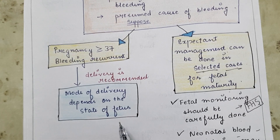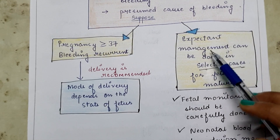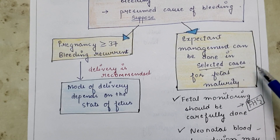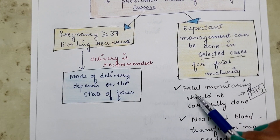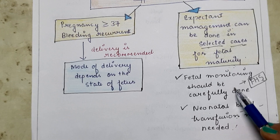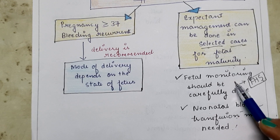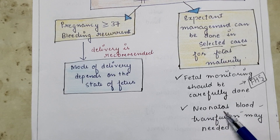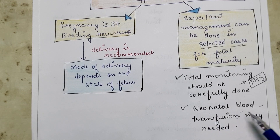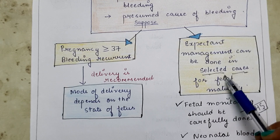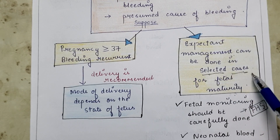If the pregnancy is less than 37 weeks, expectant management can be done in selected cases to allow fetal maturity — only when vaginal bleeding is controlled. Careful fetal monitoring is done, regularly checking fetal heart sounds for bradycardia, which would indicate decreased blood supply and risk of fetal death, requiring immediate intervention. Neonatal blood transfusion may be needed due to fetal blood loss. If bleeding continues, steroid therapy should be given for lung maturation and then delivery should be conducted.